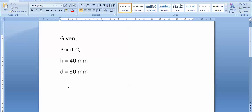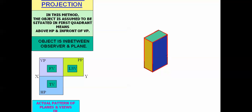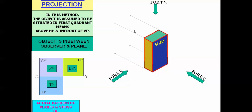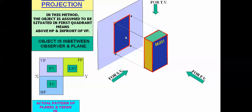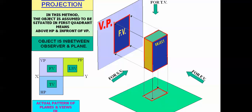Before beginning, here is a short tutorial on how to solve these kinds of point projection problems. We have placed an object in front of the vertical plane and above the horizontal plane. When you look at this object from the front, you get the front view projected onto the vertical plane — that's the blue portion. When you look from the top, you get the top view projected onto the horizontal plane — that's the green portion.